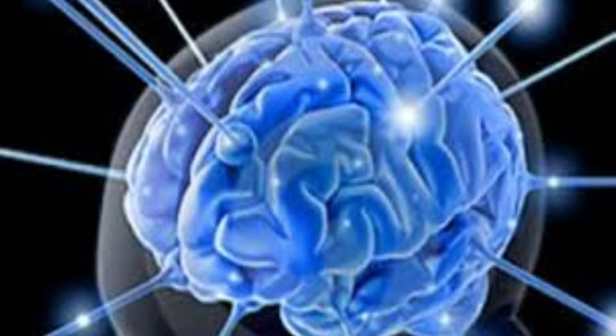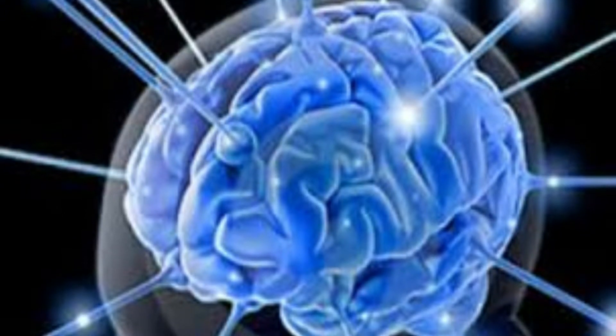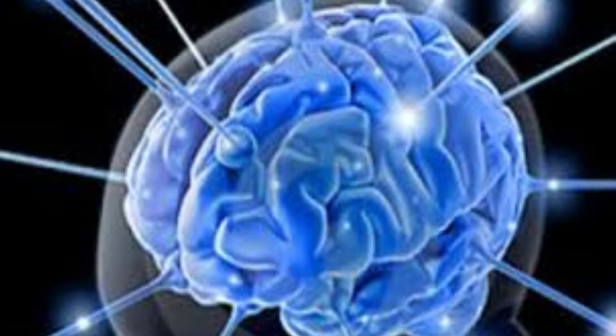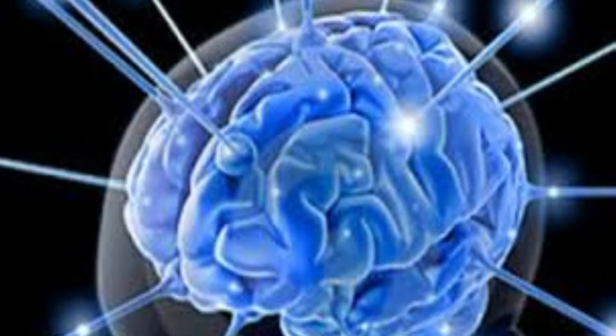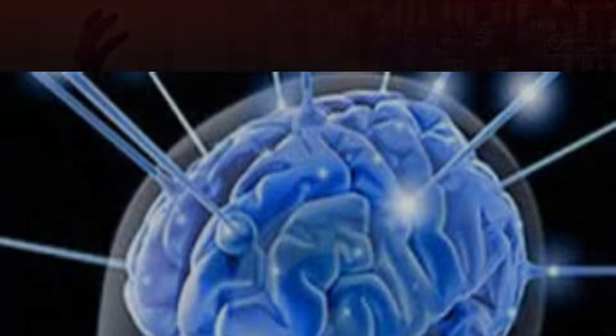There is the possibility that if researchers knew where every cell connected they could simulate how a brain works and, in the most extreme form, model an entire life in a computer. This could lead to a huge advancement in AI and artificial brains, along with the field of transhumanism.